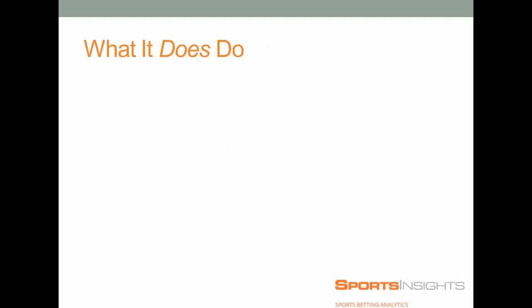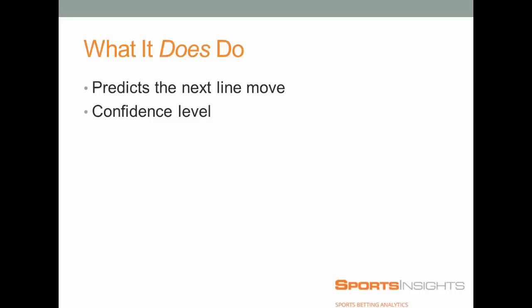So what does it do? Well, first of all, it does predict the next line move, and it does it very accurately. It's going to tell you with a confidence level which way this game is going to go. We'll say 85% confidence level this game — Virginia will go from 3.5 to 3, as you've seen in our example. So there are different indicators that give us different confidence levels. Stuff will be in the 90s, in the 80s, in the 70s. The lowest confidence level we'll give out is around 67%.